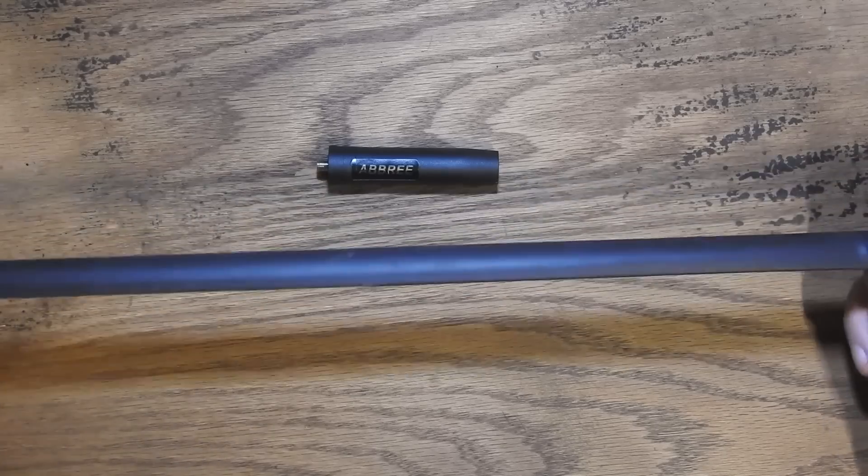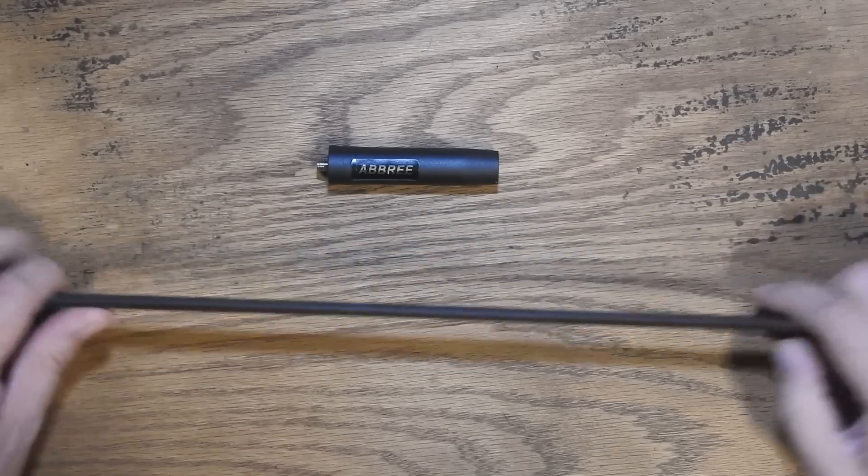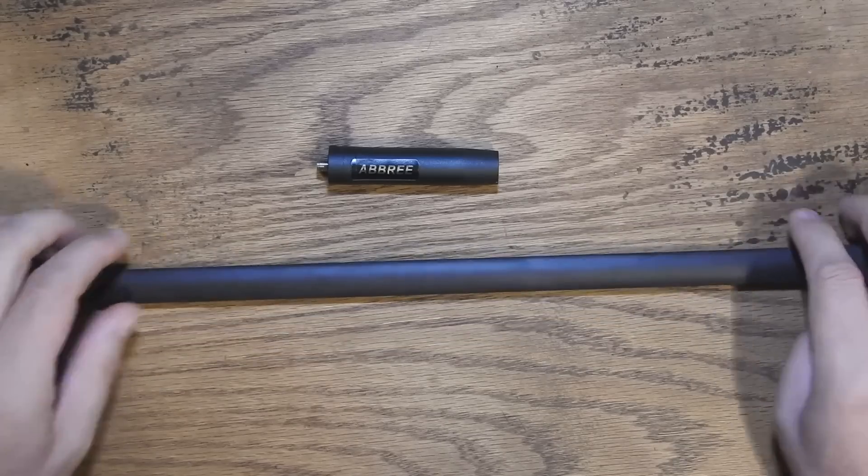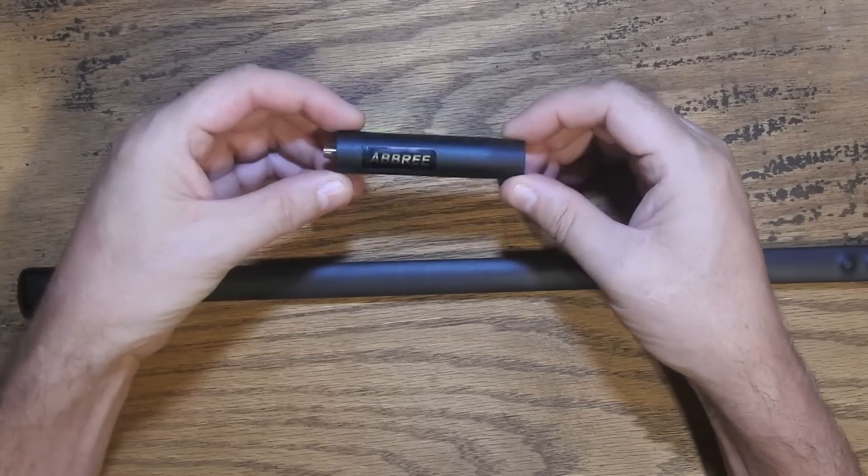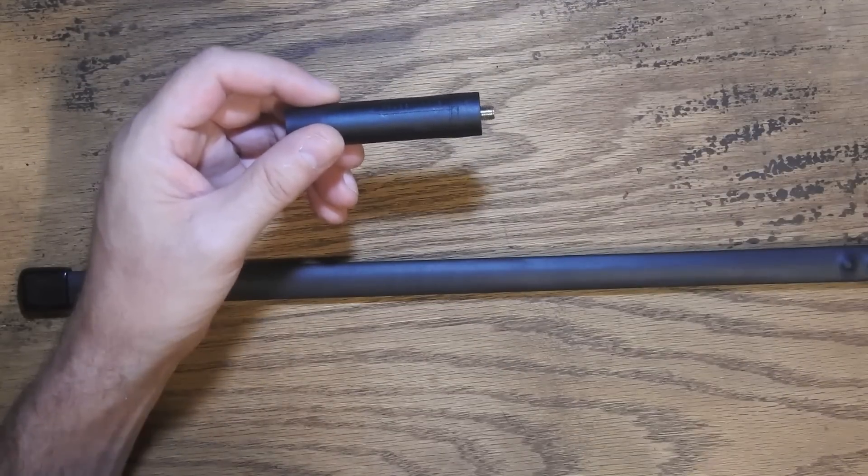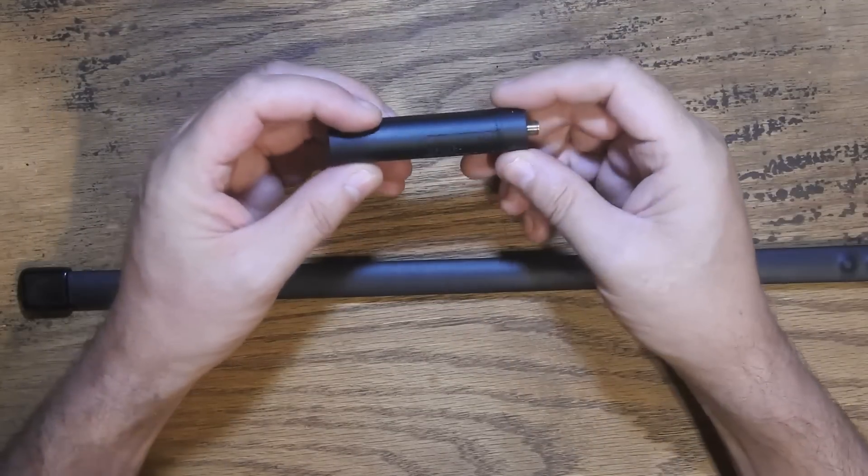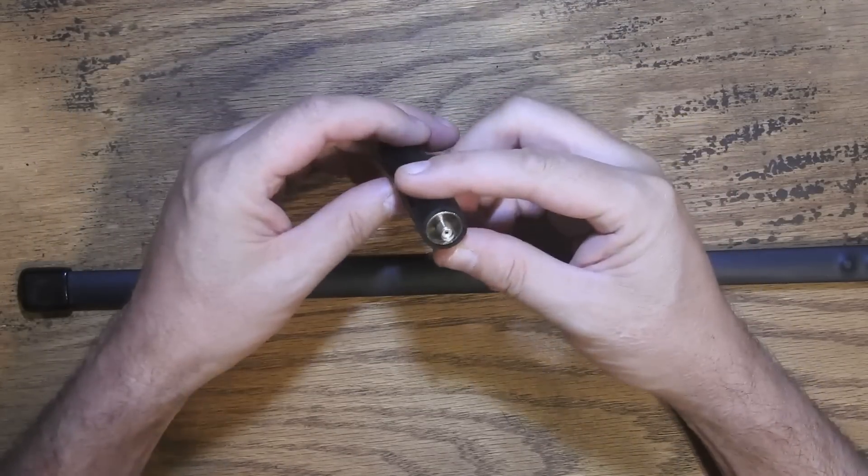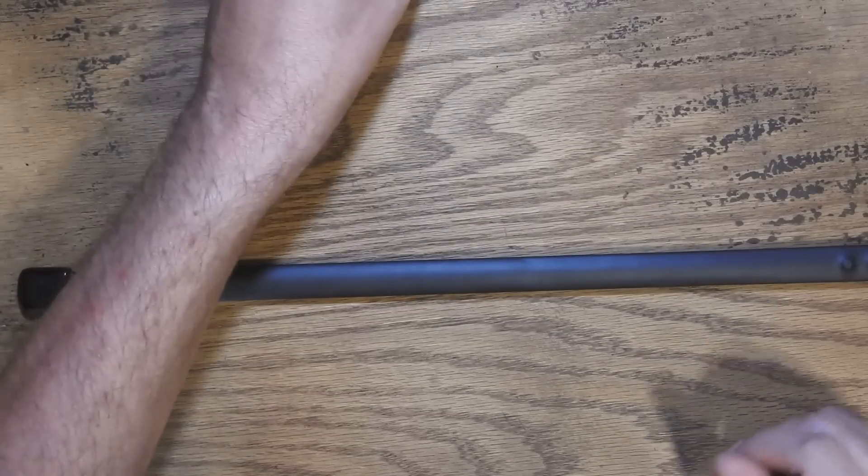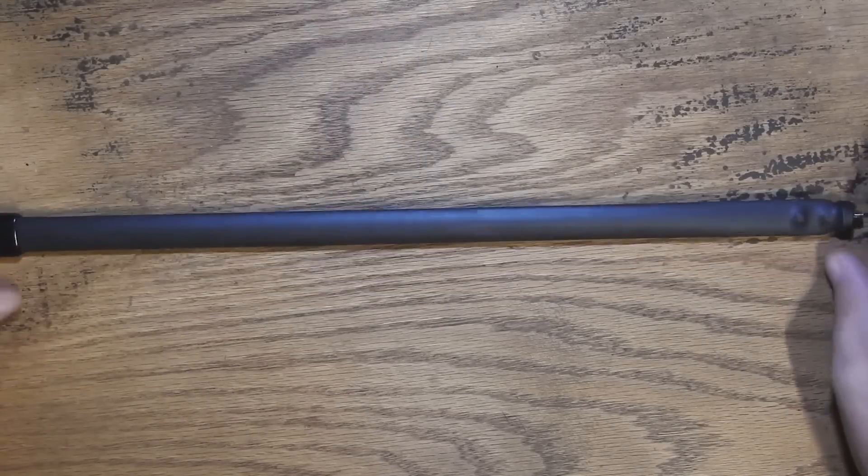We're gonna find out what the antenna itself is made of and then, this is the tricky part, we're gonna take this base apart and see what's going on inside of here. This will be tricky to take apart but I have a plan. Let's start with the radiator.